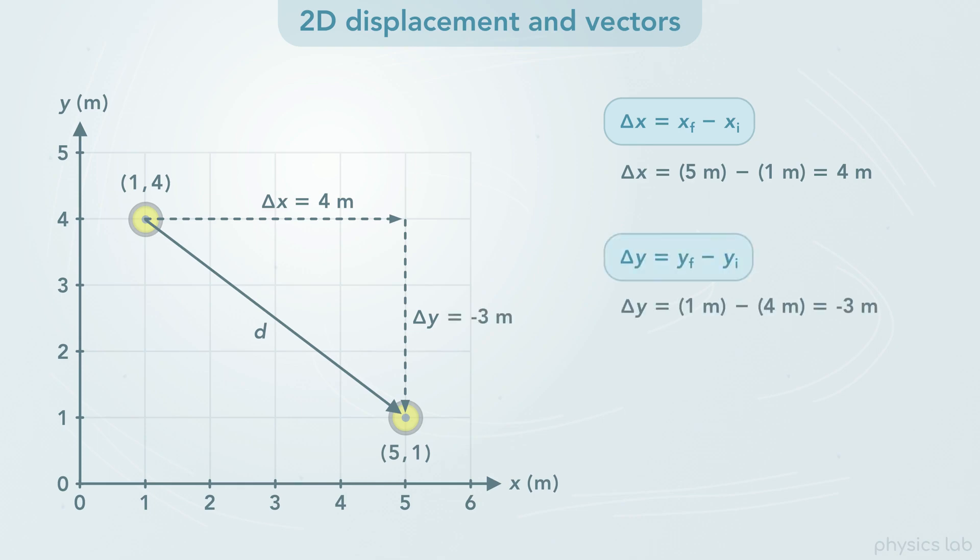But delta y would be 1 meter minus 4 meters, which is negative 3 meters. Remember, displacement is the final position minus the initial position. So delta y is negative.